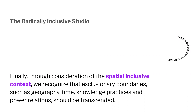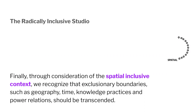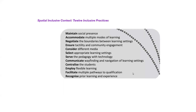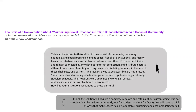Finally, through the spatially inclusive context, we recognize that exclusionary boundaries such as geography, time, knowledge, and power relations should be transcended. Twelve inclusive practices are proposed, including recognized prior learning and experience. The start of the conversation focuses on maintaining social presence in online spaces and maintaining a sense of community.